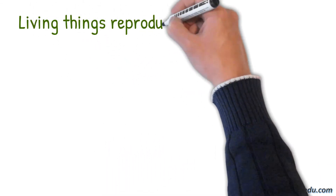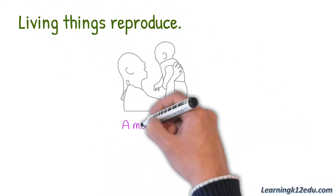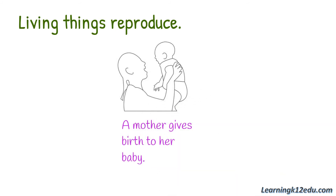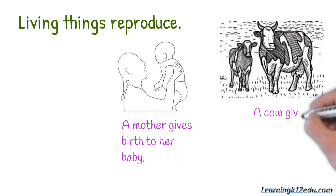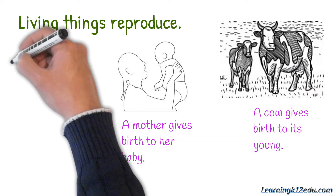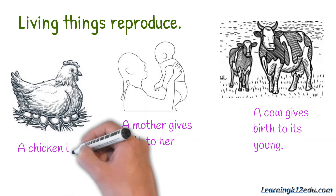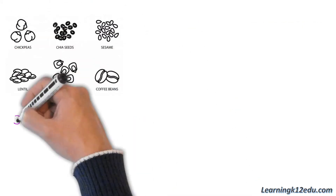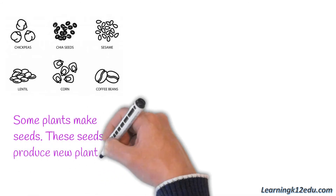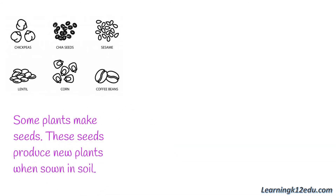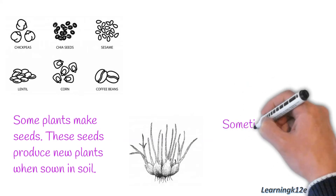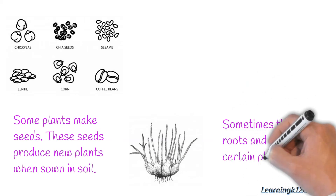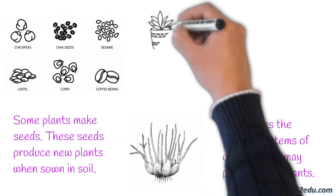Living things reproduce. A mother gives birth to her baby. A cow gives birth to its calves. A chicken lays its eggs. Some plants make seeds, and these seeds produce new plants when sown in soil. Sometimes the roots and stems of certain plants may also produce new plants.